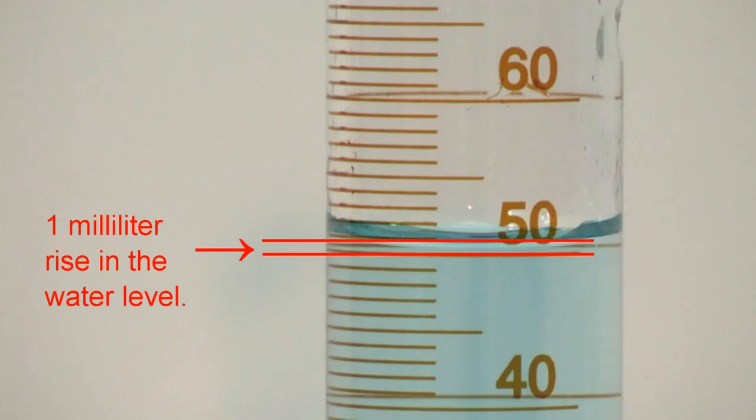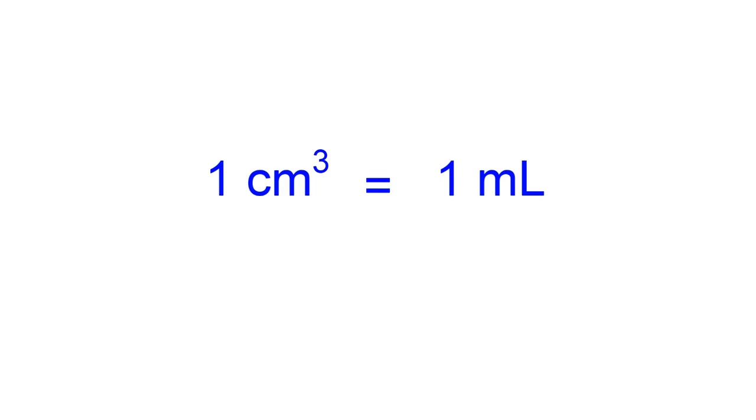And we know that the rise of the water is equal to the volume of one milliliter. Therefore, once again, we see that the volume of one cubic centimeter is equal to the volume of one milliliter.